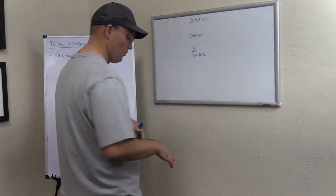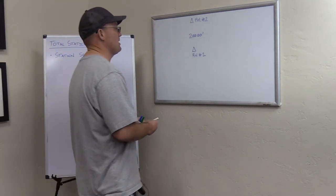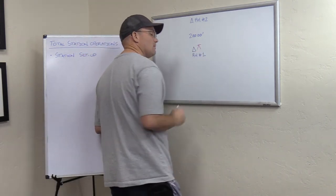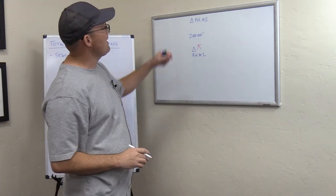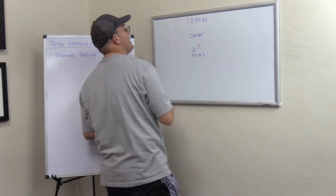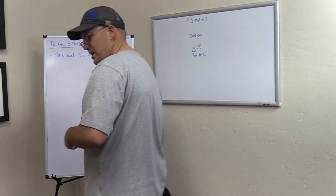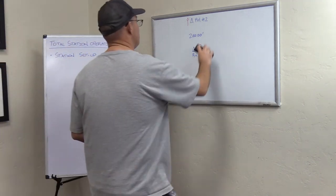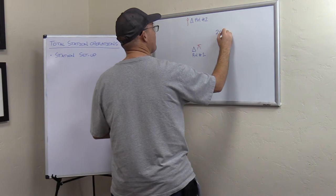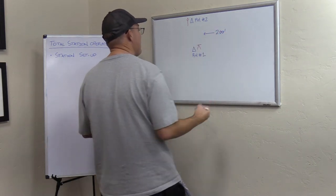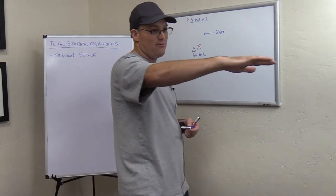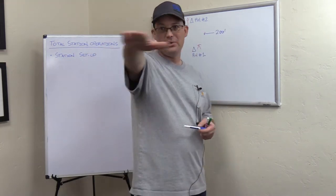We're going to go out with our total station and set up the instrument and level it on RH number one. Now, we're going to set our back sight on RH number two. We set up and level the total station, and now we've established a level field — we've established the level plane at our instrument.